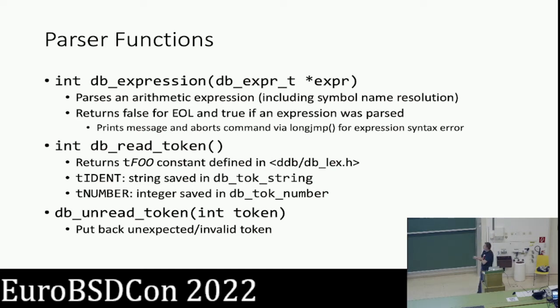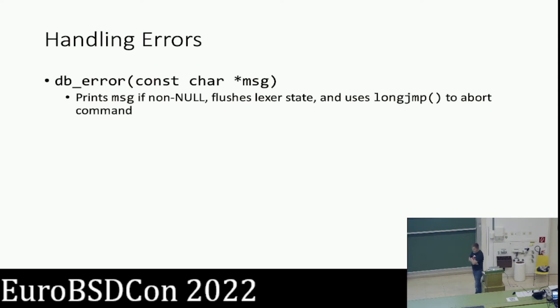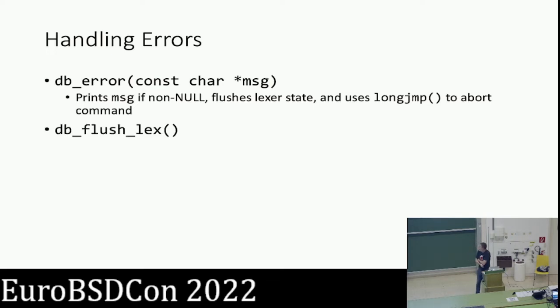When inside these functions parsing your own syntax, you need to handle errors. The simplest way — though many commands in the tree don't currently use this — is a function called db_error. It takes a simple C string, prints it out if non-null, then completely flushes the lexer state and triggers a longjmp back out to the main loop. So if you have any side effects to undo, do them before calling db_error because you don't get a chance to continue after it. The alternative if you don't want the longjmp is db_flush_lex, which completely flushes the lexer state and throws away everything pending.